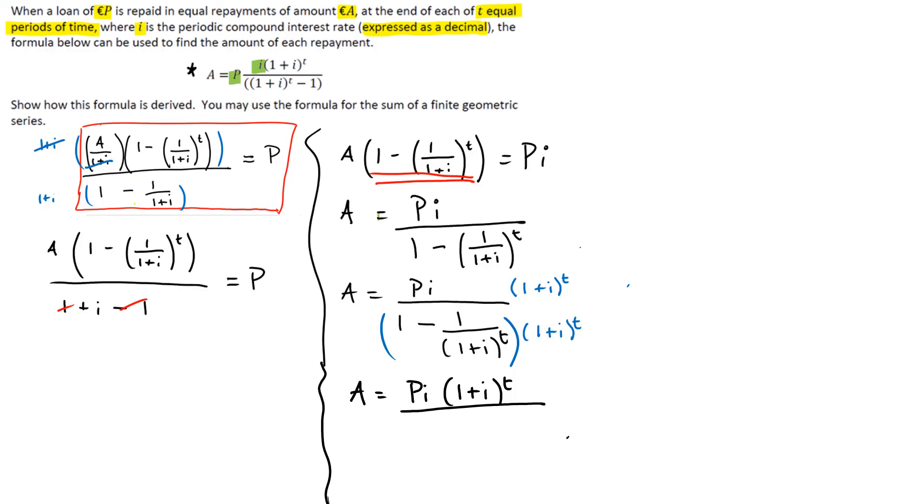1 times 1 plus I to the power of T and when I multiply the fraction by it the fraction effectively disappears.